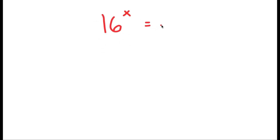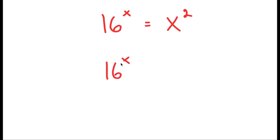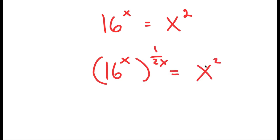In this video I'm going to solve the equation 16 to the power of x is equal to x to the power of 2. To solve this, I'm going to first start by taking the power of 1 over 2x on both sides. So I get 16 to the power of x to the power of 1 over 2x, equals x to the power of 2 to the power of 1 over 2x.